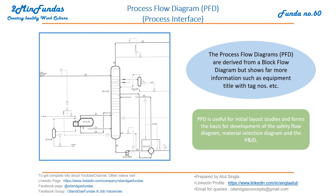The process flow diagram is derived from a block flow diagram but shows far more information, such as equipment titles with tag numbers. If you see the left figure, you can see one equipment with equipment numbers, flow direction, and tag numbers — this is the basic information available in a PFD.